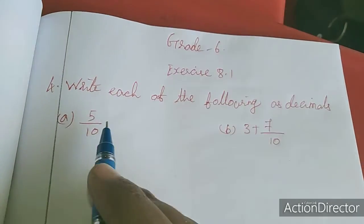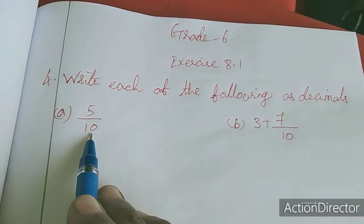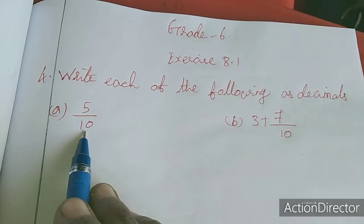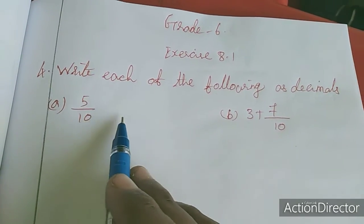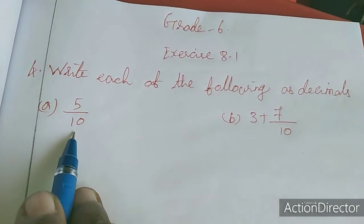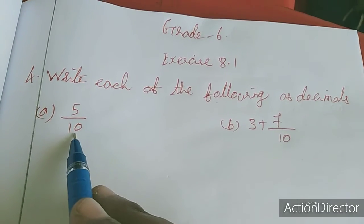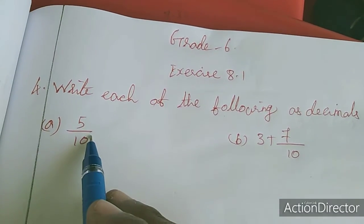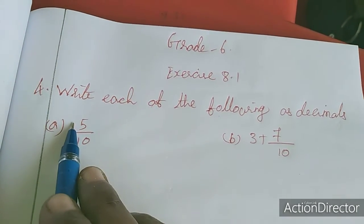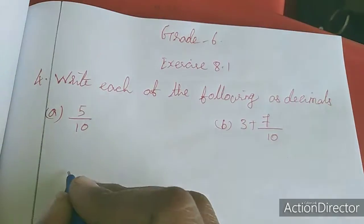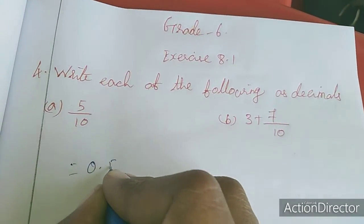See here, 5 by 10. First one, decimal le convert aludukkik, denomination paakkunun. Denomination le 10, 100, 1000 le arukkun. Here only one 0 in 10, so one digit kumunna adi dot paikkunun. So, it is 0.5.